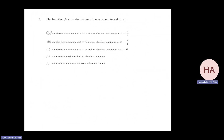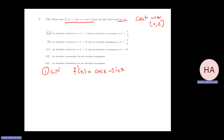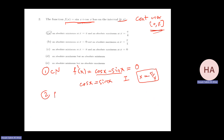Let's do an example. The function is sine x plus cosine x, continuous over the closed interval from 0 to pi. My first step is to find the critical numbers. f prime equals cosine x minus sine x. This function is always differentiable, so I only check when f prime equals zero, which means cosine x equals sine x. Over this interval, that only occurs in the first quadrant, so x equals pi over 4.